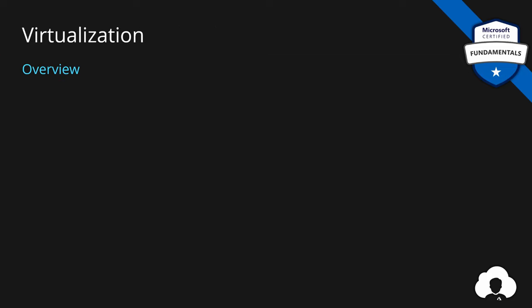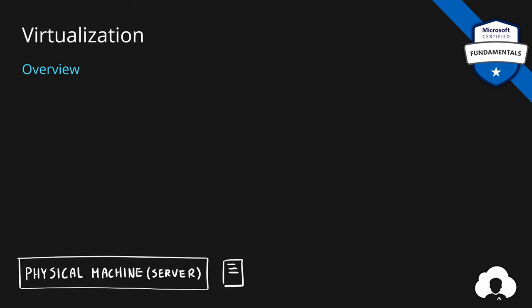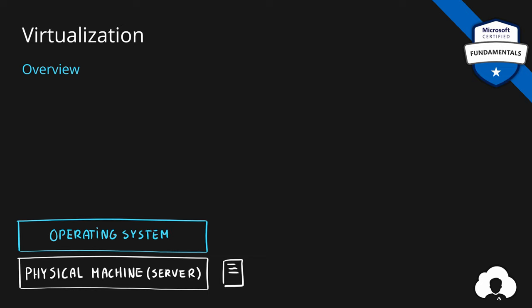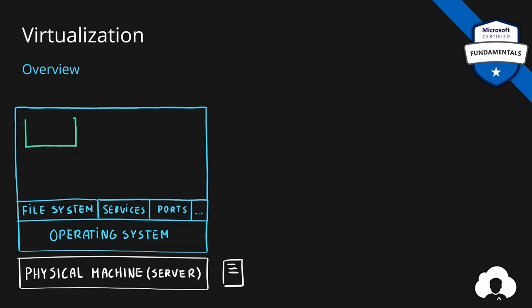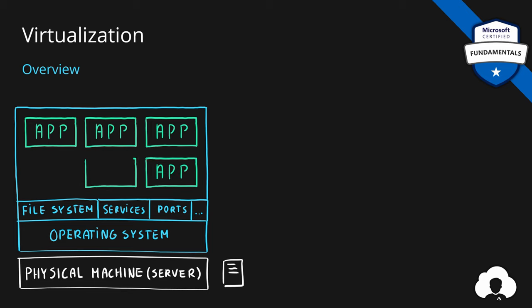Our first service on the list is virtual machines. But in order to talk about virtual machines, let's talk about virtualization in general. If you have a physical server or physical machine, you will first install an operating system which will have some standard components like file system, some services, some ports, and other configuration. The problem with hosting multiple applications on the same operating system is that they will share the same file system, same services, same ports and other system configurations. Because there are no boundaries between those applications, at some point they will collide — which is very bad.